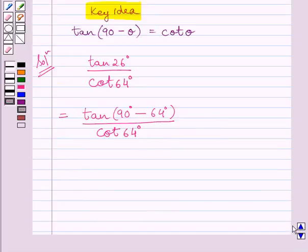Now, from the key idea, we know tan(90 minus theta) is equal to cot theta. Here, the value of theta is 64 degrees.